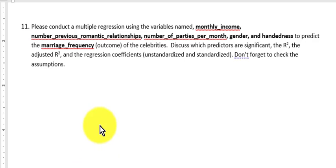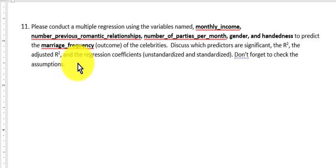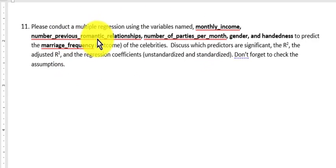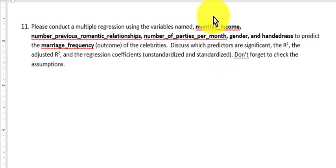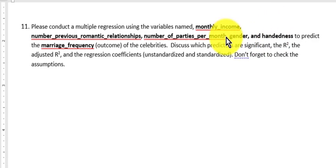We're going to try to predict marriage frequency between all these people using monthly income, number of previous romantic relationships, and number of parties per month. Those are three continuous variables, but we're also going to throw gender and handedness in there, which are categorical variables.